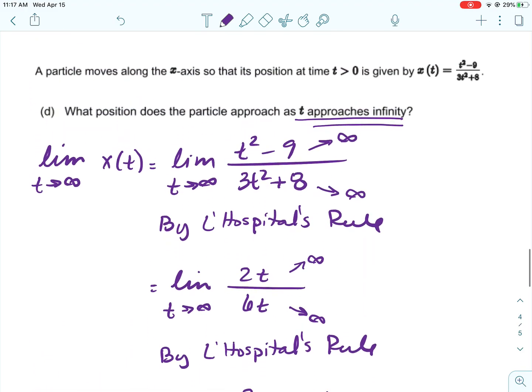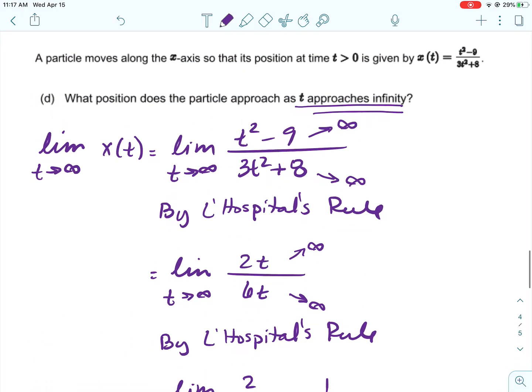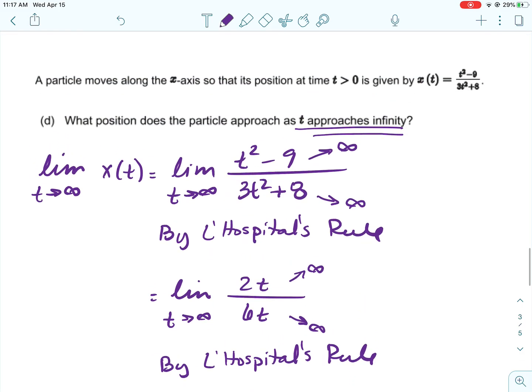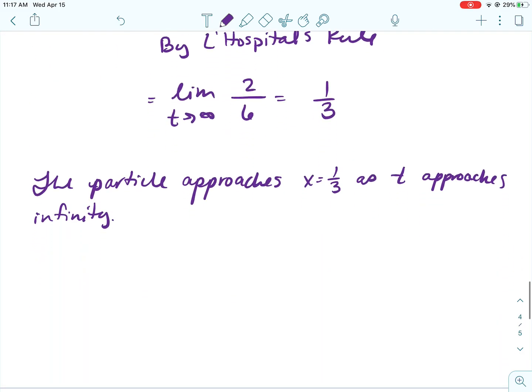So what that means is the particle approaches x equals 1 third as t approaches infinity. So it's important you understand what that 1 third is, because x is talking about the position and the position is the position on the x-axis. So that's where the particle is approaching on the x-axis as the time is approaching infinity.